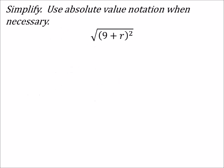Like this example. We got that quantity, 9 plus r, we're squaring it and then taking the square root of it, which means we can really just take the absolute value of 9 plus r.